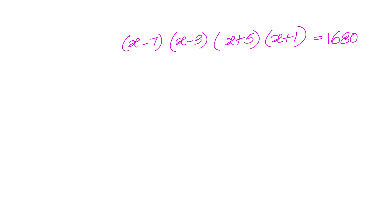Now, how to solve this problem? For that, what we will do is rearrange the second and third terms. We will write it as x minus 7 multiply that with x plus 5, then x minus 3 multiply with x plus 1 equals to 1680.